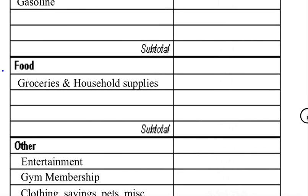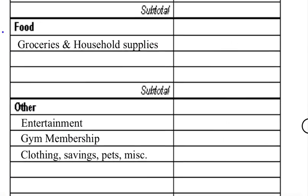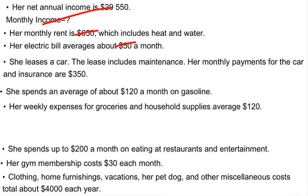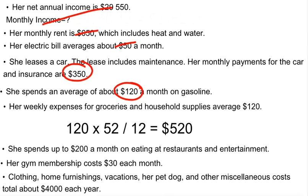Next we're looking at lease, insurance, gas, groceries, and other expenses. The car lease is $350 monthly — that's fine. Gas is also monthly. Groceries, however, are listed as a weekly expense, so we need to convert: multiply by 52 first to get the annual amount, then divide by 12. So $120 weekly becomes $520 per month. We can't just multiply by 4 — that goes back to the accelerated weekly payments issue.